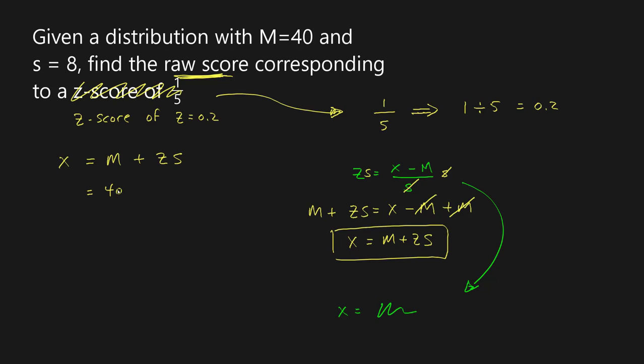My sample mean is 40. My z-score I know is 0.2 and the standard deviation is 8. And so I believe that 0.2 times 8 is 1.6. So this will be 41.6. So that is my raw score.